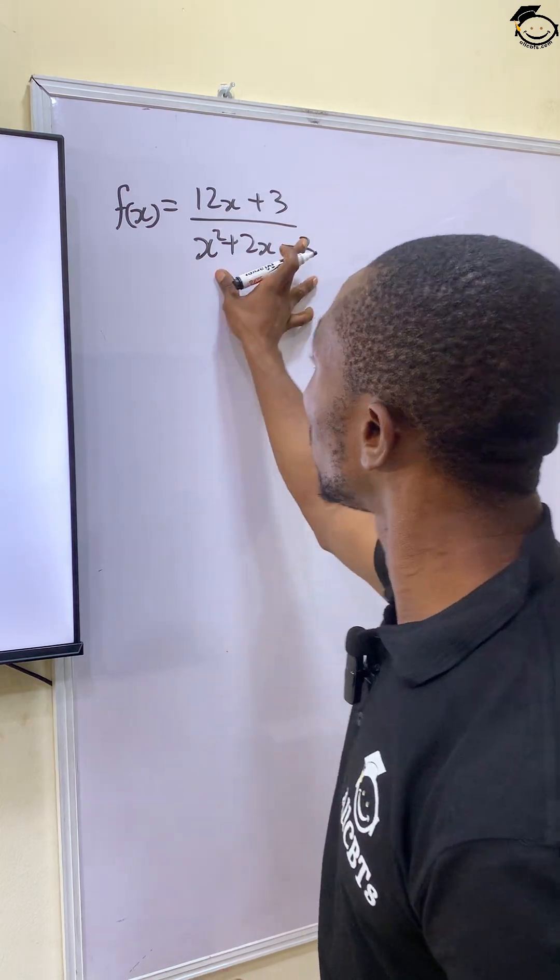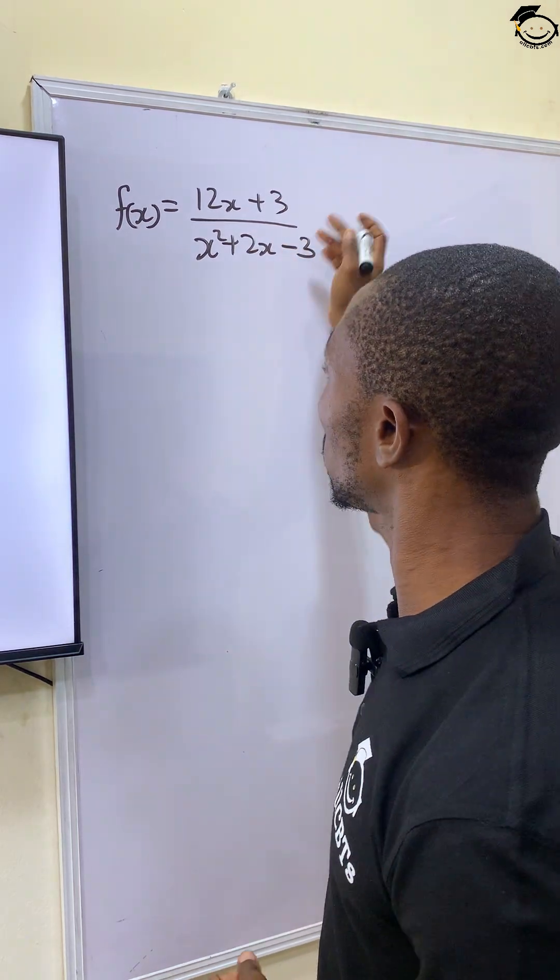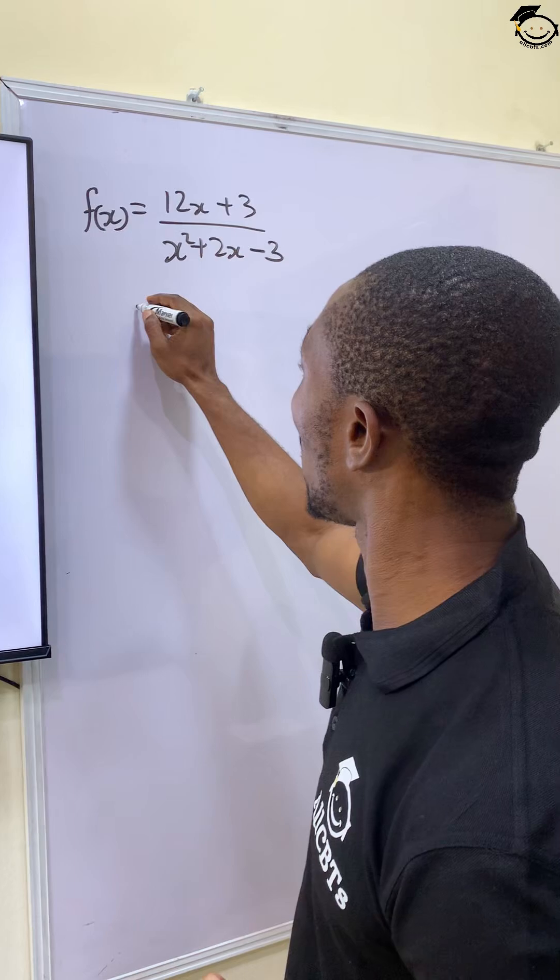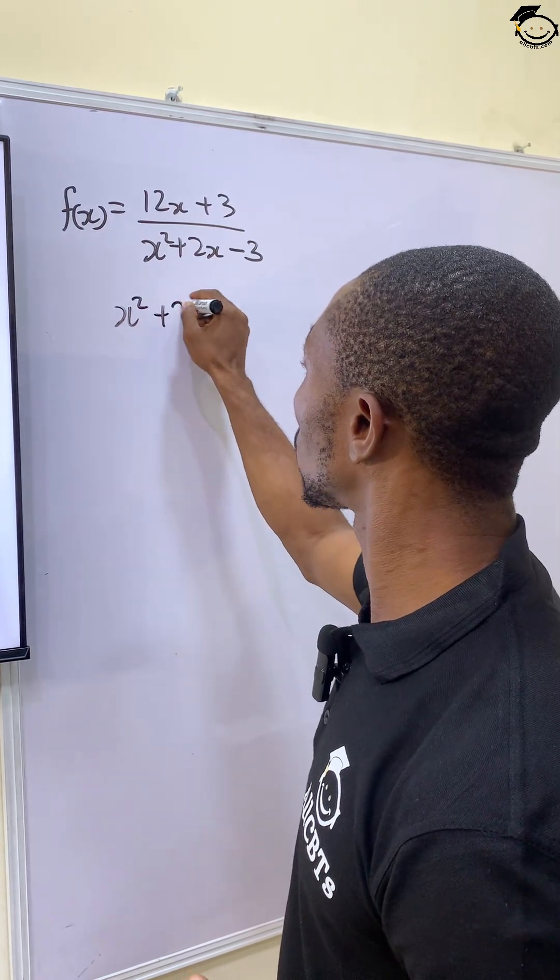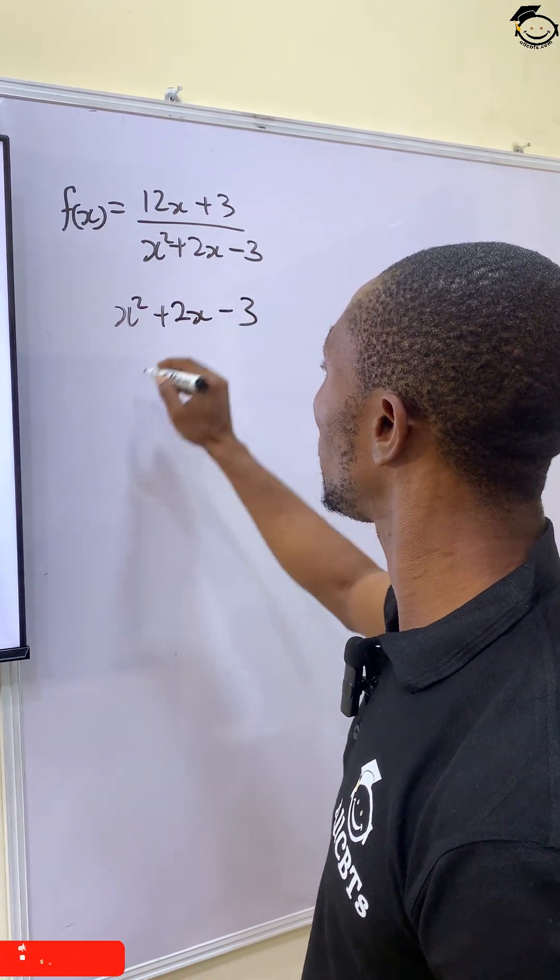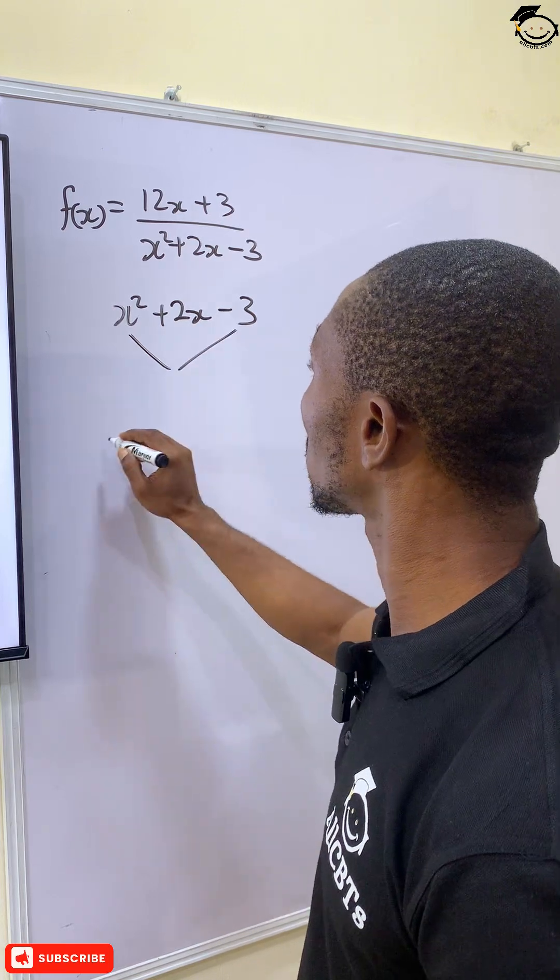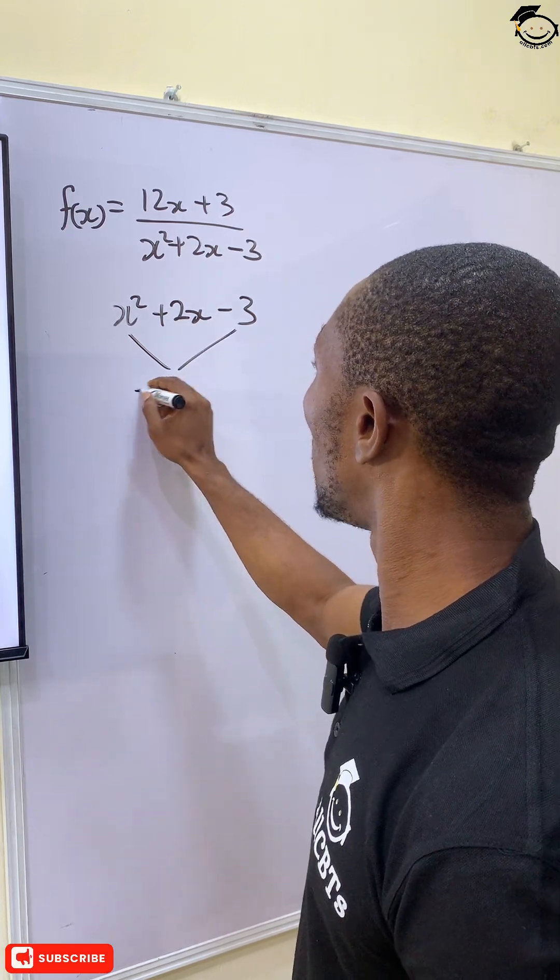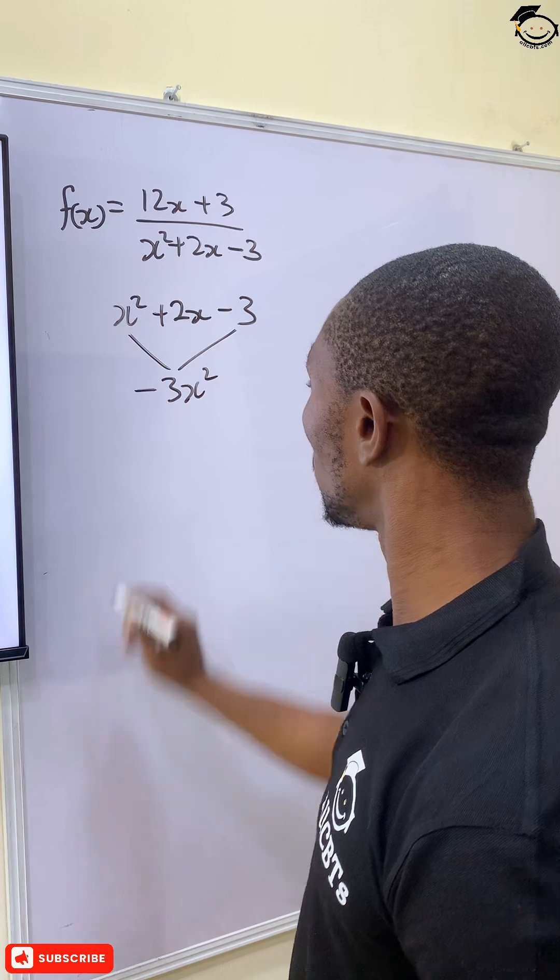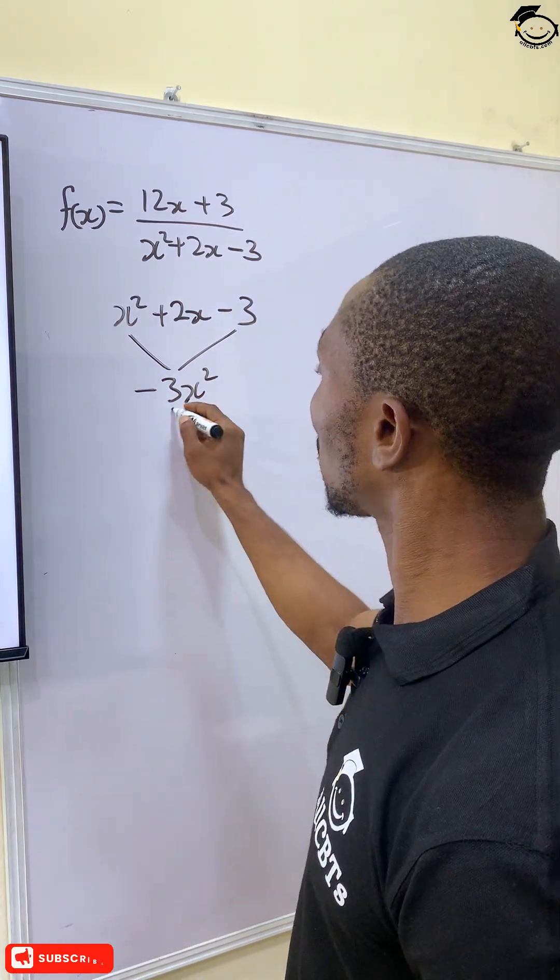So let's find the roots of our equation that makes this question undefined. Now we have x squared plus 2x minus 3. Alright, factorizing this, we're having it as minus 3x squared.